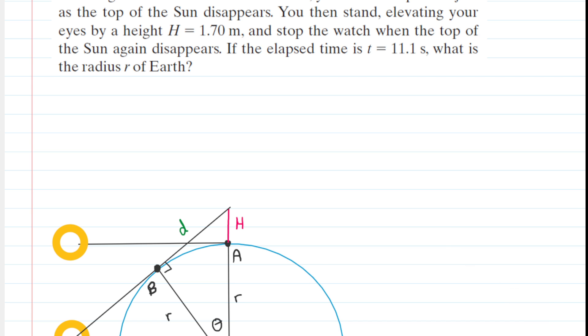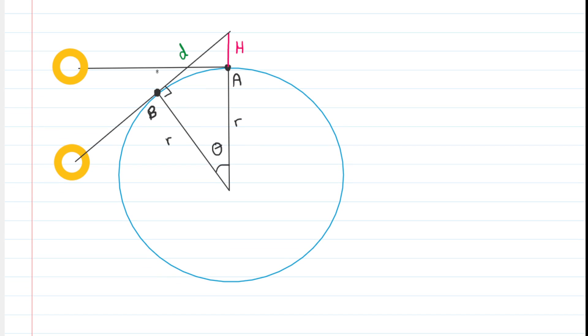So let's talk about some of the labels in the diagram. We have the height of the individual labeled H. We have the two radii of the Earth labeled. Point A is when she was lying down. Point B is an arbitrary point that's going to help us form a right triangle. And then the distance from point B to the top of the individual's head was labeled D.